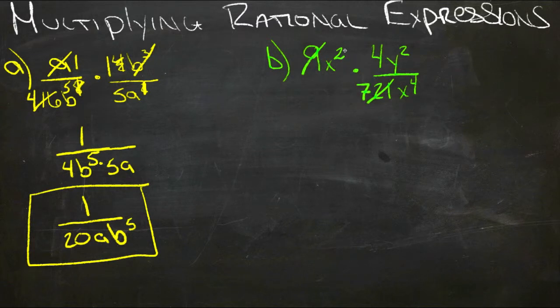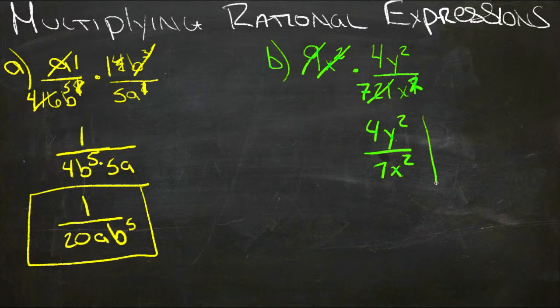And then x squared cancels with x to the fourth, leaving two of them. So that gives us 4y squared over 7x squared. And that's as far as that goes.